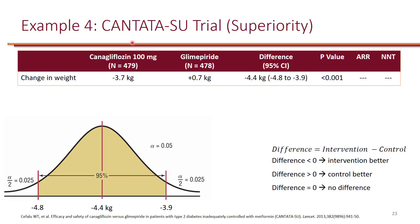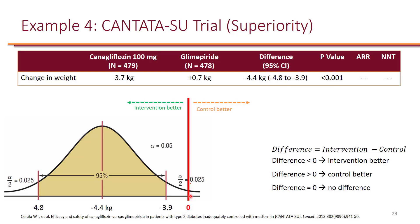The CANTATA-SU trial is a superiority trial with a surrogate endpoint of change in weight. They found a difference in weight of negative 4.4 kilos — the point estimate. Results are statistically significant based on the p-value, and the confidence interval goes from negative 4.8 to negative 3.9, which does not cross the line of no difference — zero — since we're looking at an absolute difference. However, because this is a surrogate endpoint, we do not calculate number needed to treat.